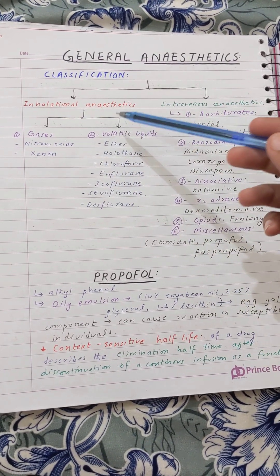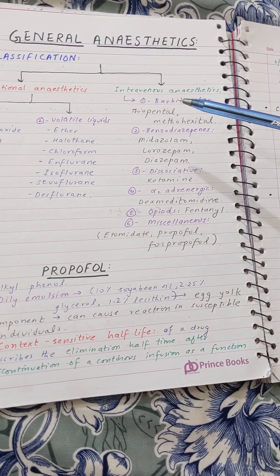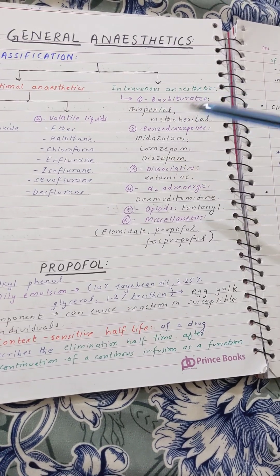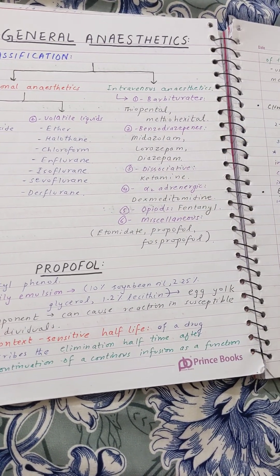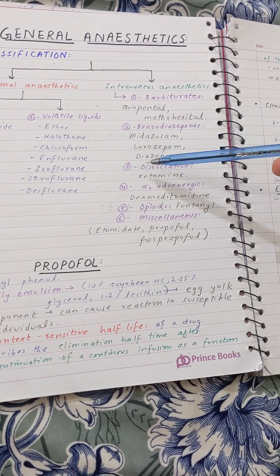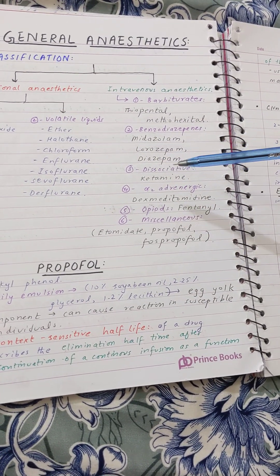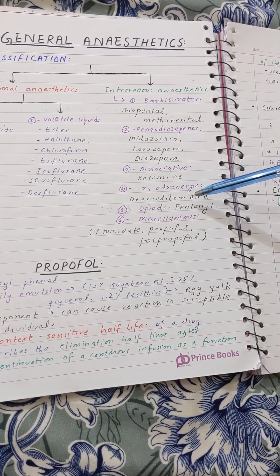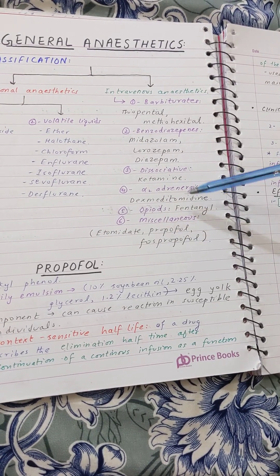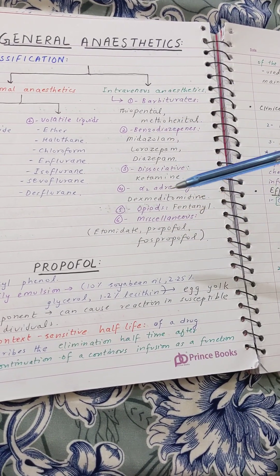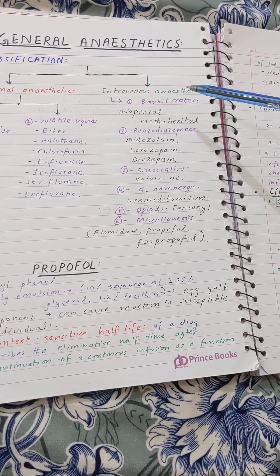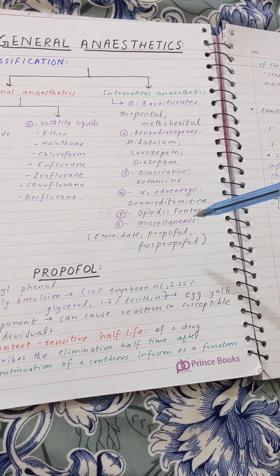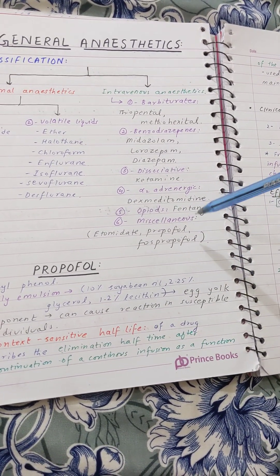For IV anesthetics, we have barbiturates — the most important is thiopental. We have benzodiazepines like midazolam in the management of status epilepticus, and also diazepam. Dissociative anesthetics include ketamine. Alpha-2 adrenergic agents like dexmedetomidine can also be given as IV anesthetics. Opioids such as fentanyl are also used via IV routes.